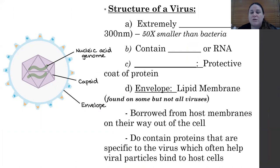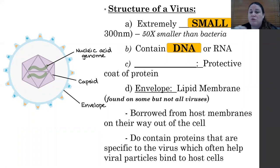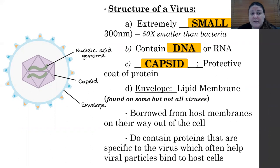Let's talk about the structure of a virus because viruses are all over the news right now. Viruses are extremely small — we're talking nanometers, which are a billionth of a meter. They are 50 times smaller than a bacteria. They contain some genetic material, which can be DNA or RNA. And they have what's called a capsid — it's a protective coat of protein. So all viruses are going to be really small, contain some genetic material, and have this capsid, this protective layer of protein.